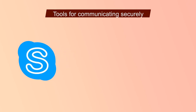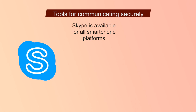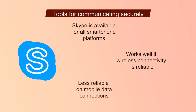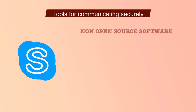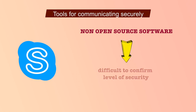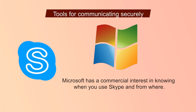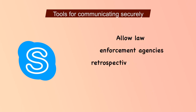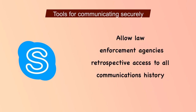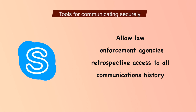Here we will discuss a few tools for communicating securely and their pros and cons, starting with the familiar one: Skype. The most popular commercial VoIP application, Skype is available for all smartphone platforms and works well if your wireless connectivity is reliable, but is less reliable on mobile data connections. Skype is non-open-source software, which makes it very difficult to independently confirm its level of security. Additionally, Skype is owned by Microsoft, which has a commercial interest in knowing when and where you use Skype, and may allow law enforcement agencies retrospective access to all your communications history.